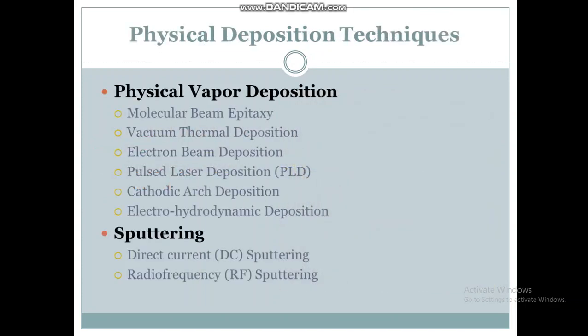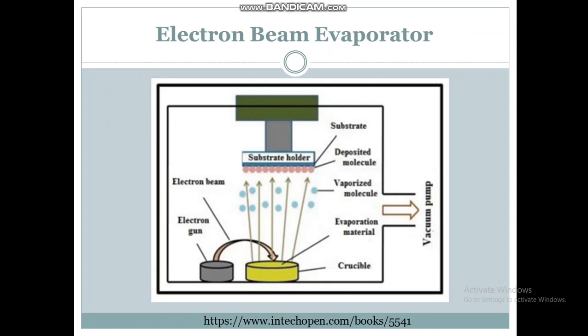Now we will discuss physical deposition techniques. Physical vapor deposition can be categorized into molecular beam epitaxy, vacuum thermal deposition, electron beam deposition, pulsed laser deposition, cathodic arc deposition, and electrohydrodynamic deposition. The second category is the sputtering technique, which includes direct current sputtering and radio frequency sputtering.